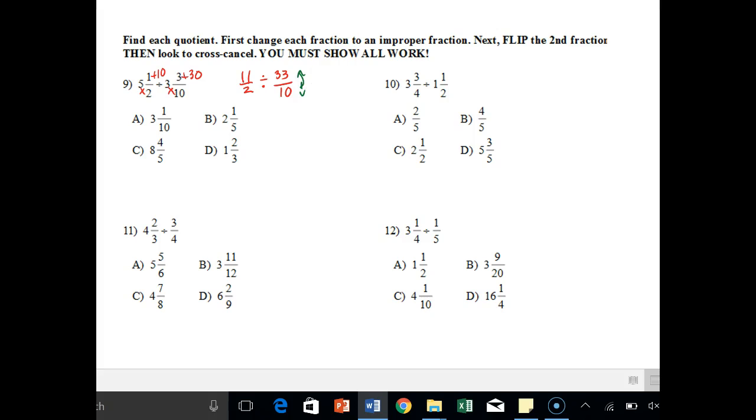First, we're going to flip it. And we're going to have now 11 over 2 times 10 over 33. Now we look to cross cancel, and we can actually do 11 and 33. We can do both by 11. So 33 divided by 11 is 3. And then 2 and 10, we can divide both by 2. 2 divided by 2 is 1, 10 divided by 2 is 5. So now I multiply straight across. And what do I get? I get 1 times 5 is 5, 1 times 3 is 3, 5 over 3. Obviously, 3 goes into 5 one time with 2 left over. So that's 1 and 2 thirds, D.